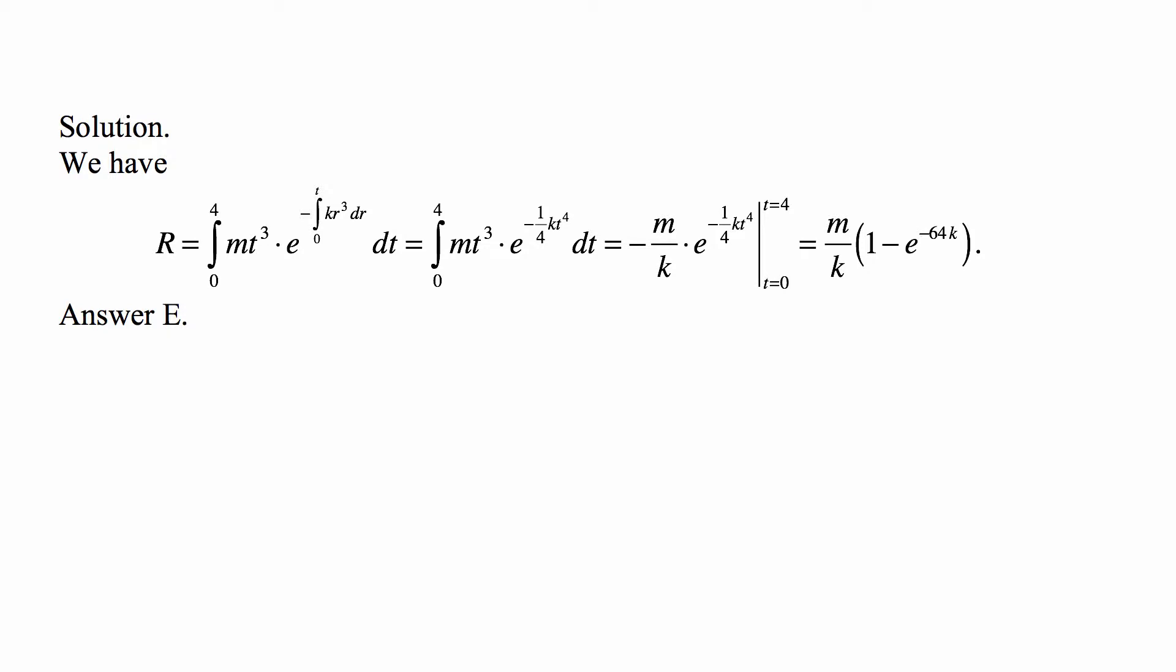Here's the solution. R equals the integral from 0 to 4 of mt³ (that's the rate of payment) times e to the minus integral from 0 to t of kr³ dr. That's the discount factor applicable to that moment in time t. Then dt for t running from 0 to 4.